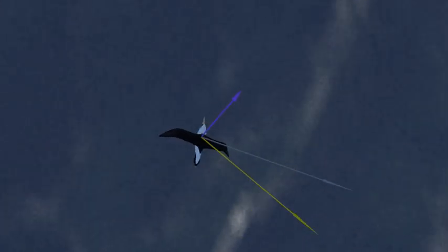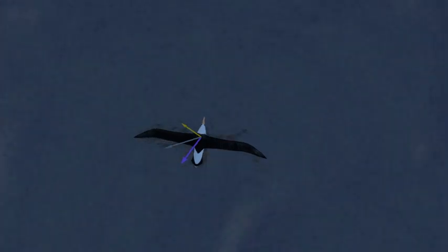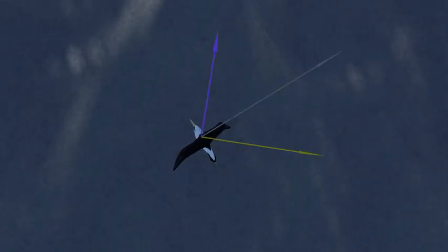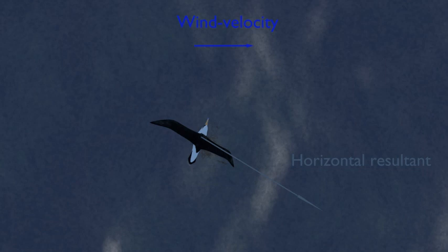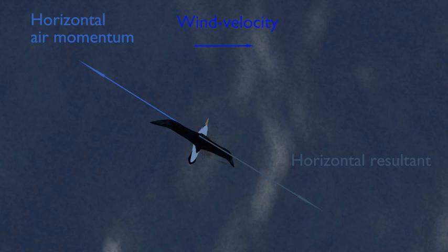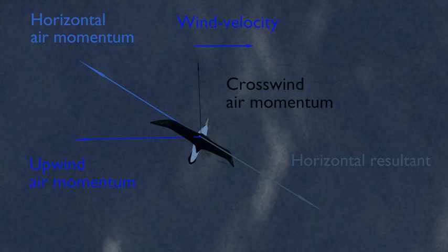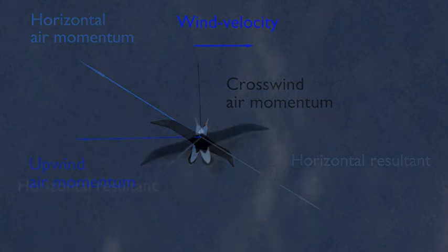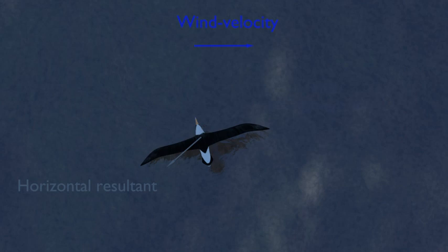Finally, how does the albatross get the energy from the wind to balance its drag losses? This is achieved by the bird flying differently shaped windward and leeward turns, causing different rates of acceleration. When the bird turns by banking, the horizontal resultant force is caused by giving horizontal momentum to the air in the opposite direction — the light blue arrow. During the leeward turn, part of this momentum given to the air — the dark blue arrow — is opposite to the wind direction. Therefore, the wind loses momentum as the bird gains momentum. During the windward turn, part of the horizontal momentum given to the air is in the same direction as the wind, and the wind gains momentum as the bird loses momentum.